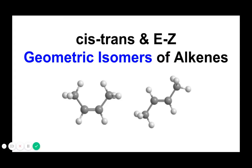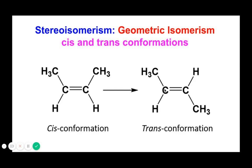We'll learn about cis-trans, or E and Z, geometric isomers — particularly for alkenes. We've learned about alkane isomers before: isomers have the same chemical formula but different arrangement. Geometric isomers are also compounds with the same chemical formula, but they are a special type of stereo isomers in which the spatial arrangement of groups attached to the carbons with the double bond are different.